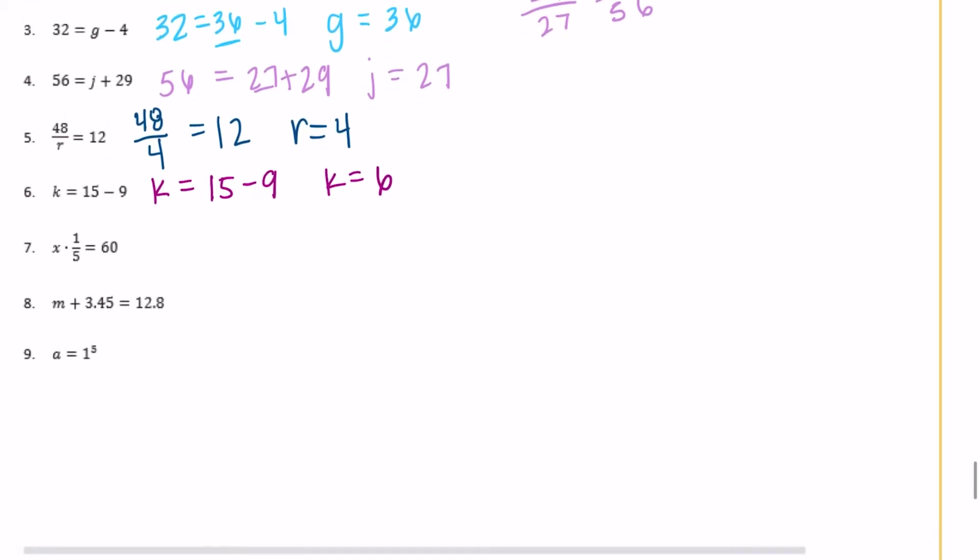Number 7: x times one-fifth equals 60. Or one-fifth—for some reason it makes more sense if I write it like this—one-fifth of something is equal to 60, which you can do because of the commutative property of multiplication. So we can switch their places and it's the same thing.